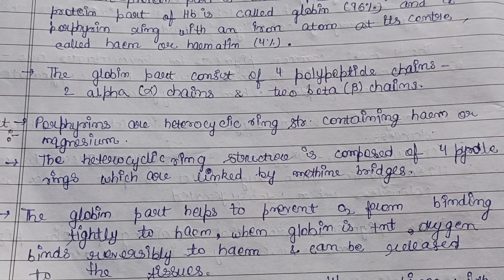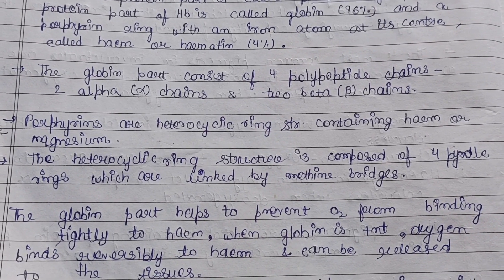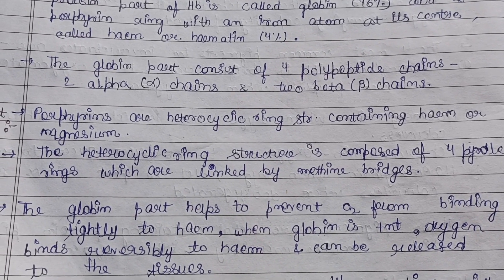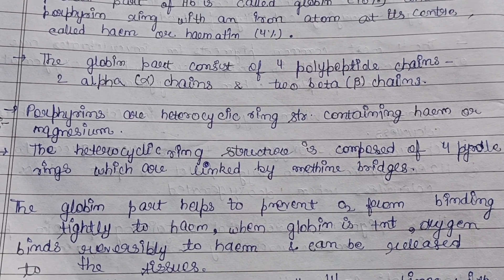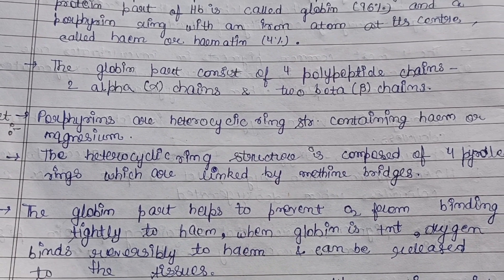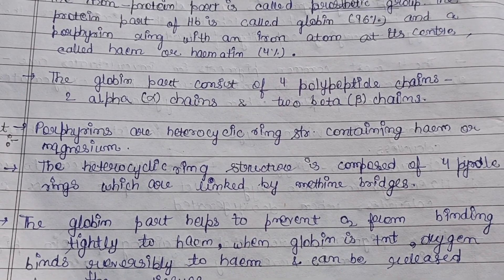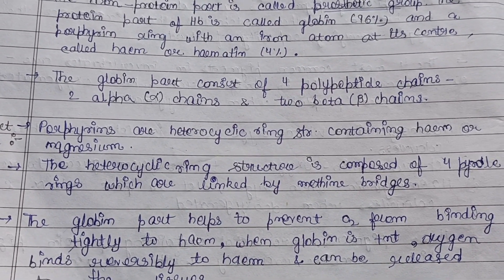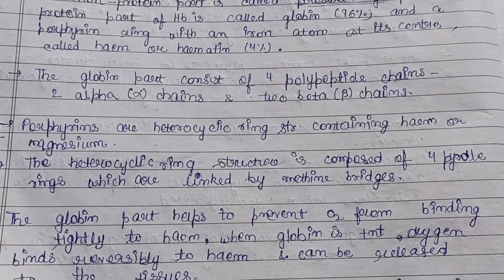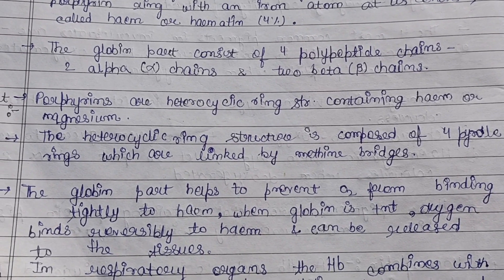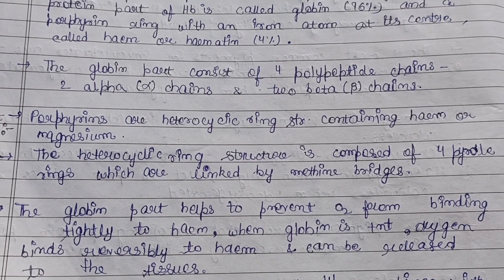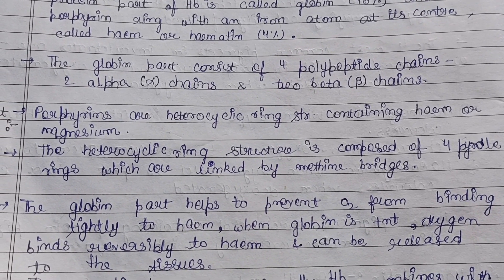The porphyrin rings are heterocyclic ring structures containing either iron or magnesium as the metal. The heme porphyrin ring structure is composed of four pyrrole rings linked by methane bridges, as seen in the hemoglobin diagram. The globin part — the 96% component — helps prevent oxygen from binding too tightly to the heme group, which contains iron and the porphyrin ring.